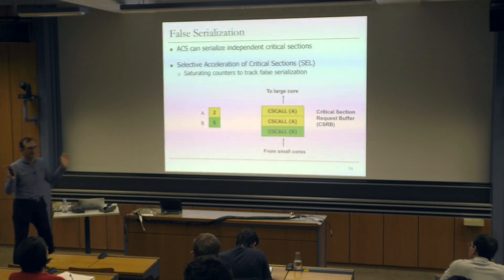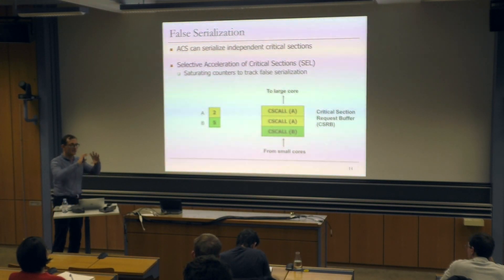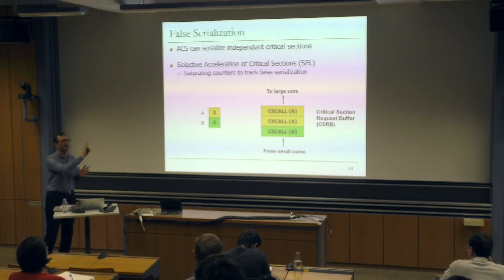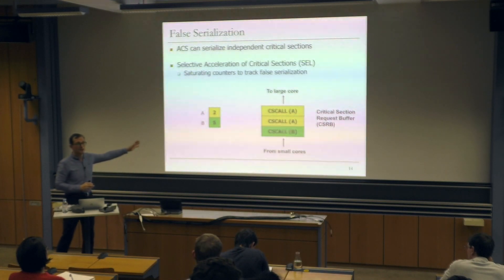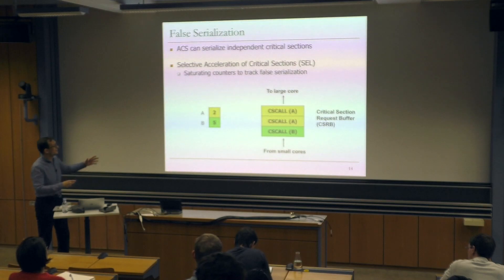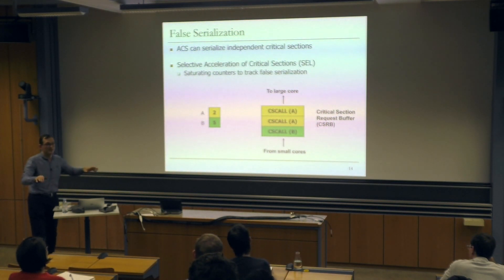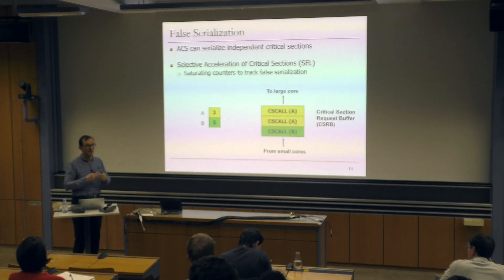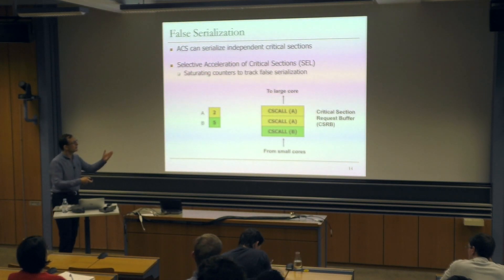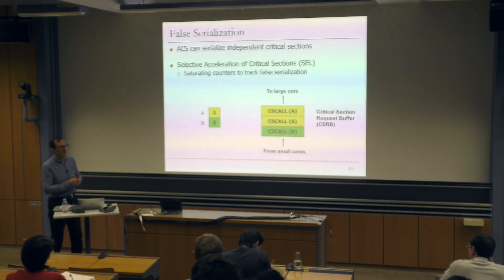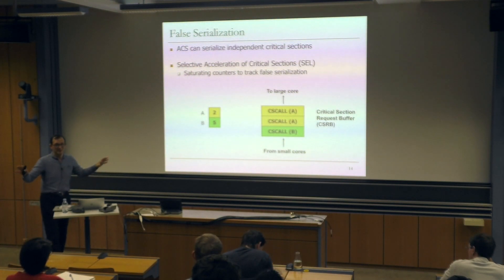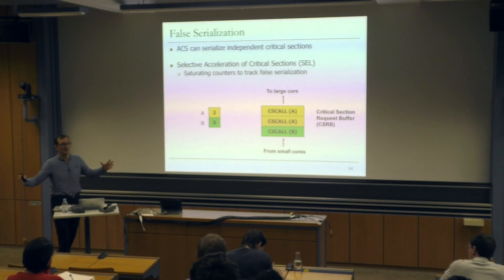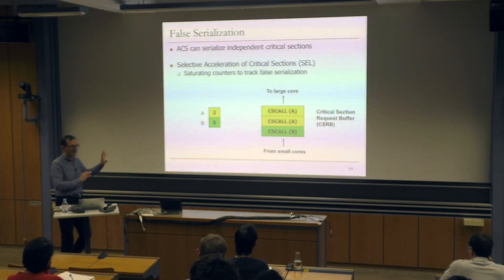One solution to false serialization is multi-threading the server so it can execute critical sections A and B in parallel. But the downside is that you're now contending for resources within the large core between two different critical sections, reducing the acceleration benefit. Another solution is having two large cores — but then your area overhead dedicated to large cores grows. We discussed this area overhead previously. This is a classic distributed systems problem: should you ship a function to a server or execute it locally? A single server can become a bottleneck.